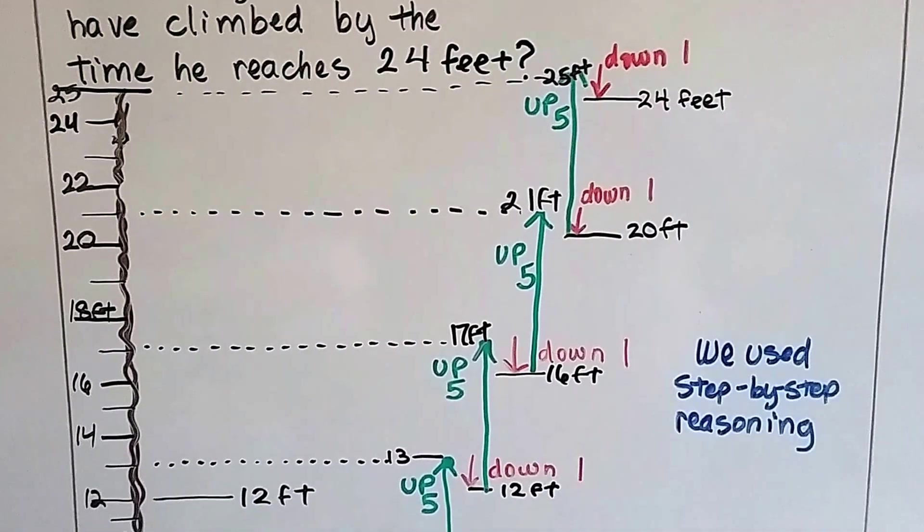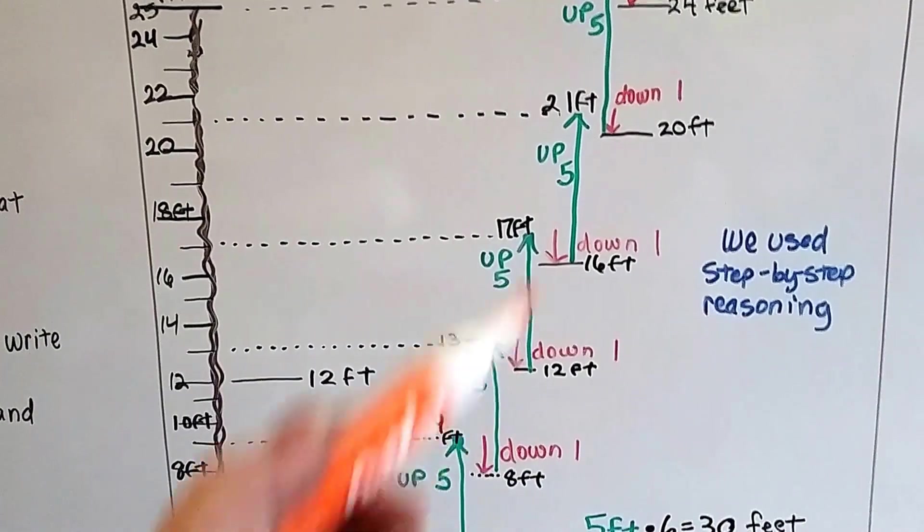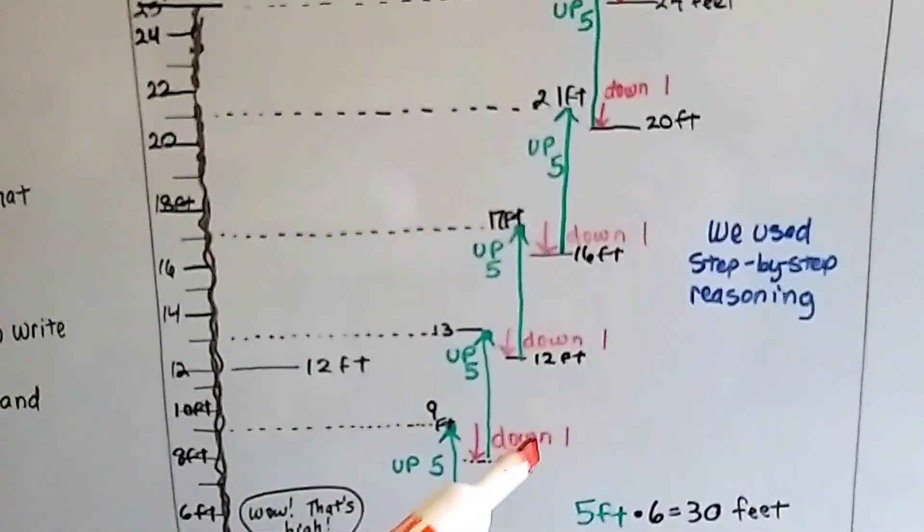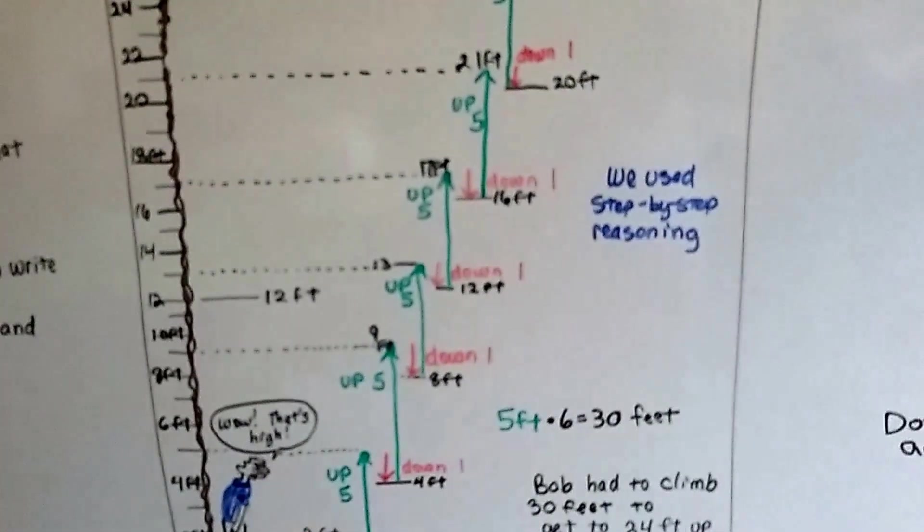So how many feet did he really end up climbing up? How many feet up did he go? Not counting the red ones, just the green ones. So what we do is, we count how many times we have five.